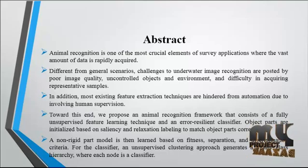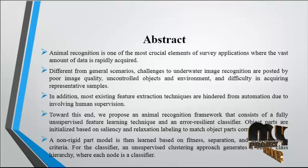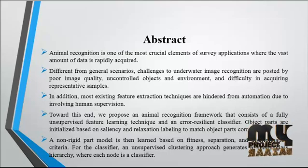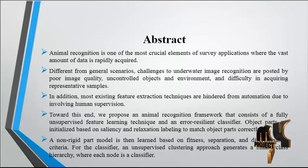This process consists of three elements: segmentation, feature extraction, and classification. In the segmentation step, the animal regions will be extracted and the background will be neglected. In the feature extraction step, the animal features such as patterns will be extracted from the animal regions. The classification will then classify the species among those present in the dataset. For example, when an image is given as input, the features will be extracted, matched with the database images, and the type of animal present in the image will be shown.